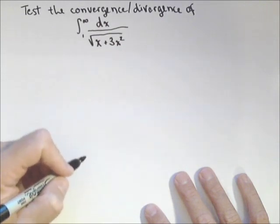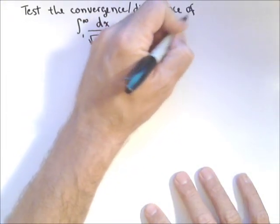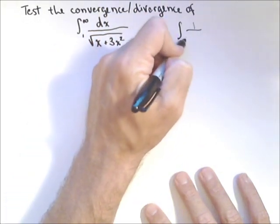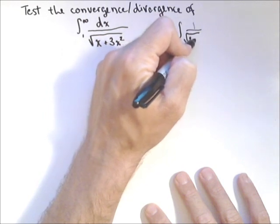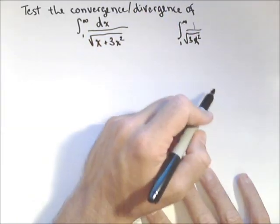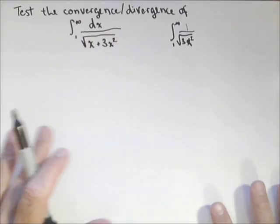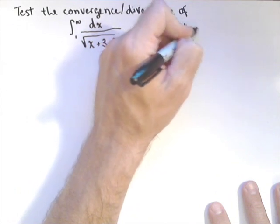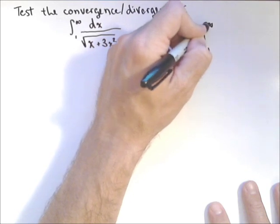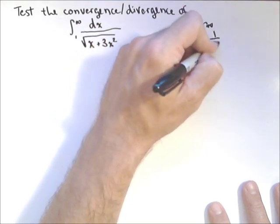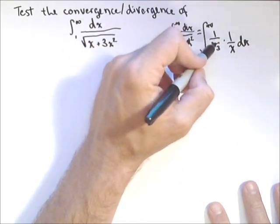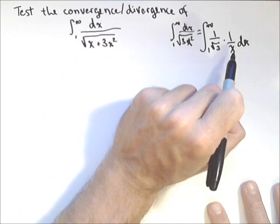So we're gonna compare to the improper integral, at least initially, and this may change, one over square root of three x squared from one to infinity. Well, that dx is actually one to infinity of one over rad three times one over x dx. So it's a constant times an integral we know diverges.